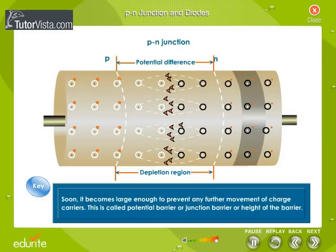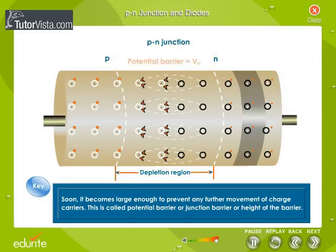Soon, it becomes large enough to prevent any further movement of charge carriers. This is called potential barrier or junction barrier or height of the barrier.